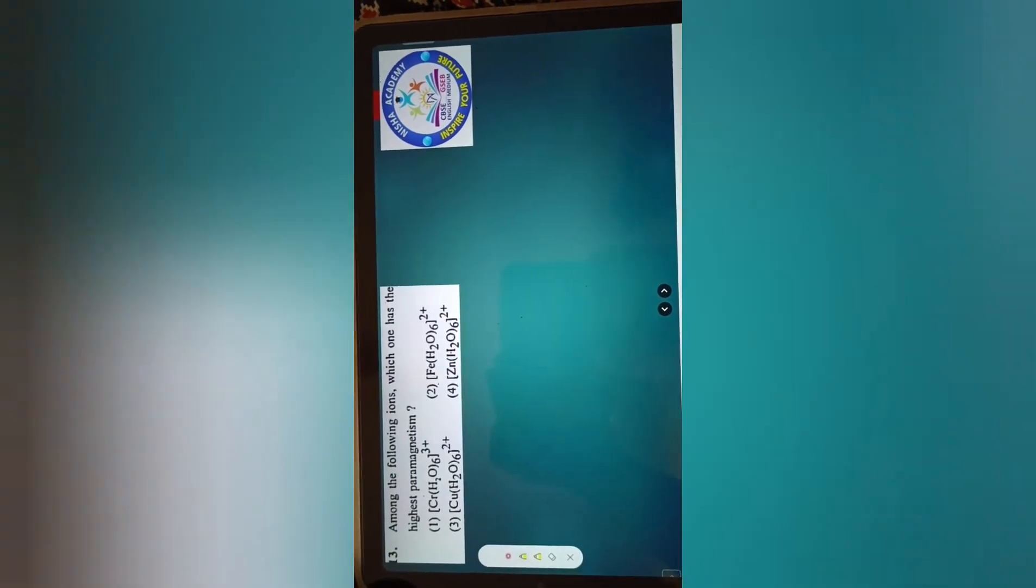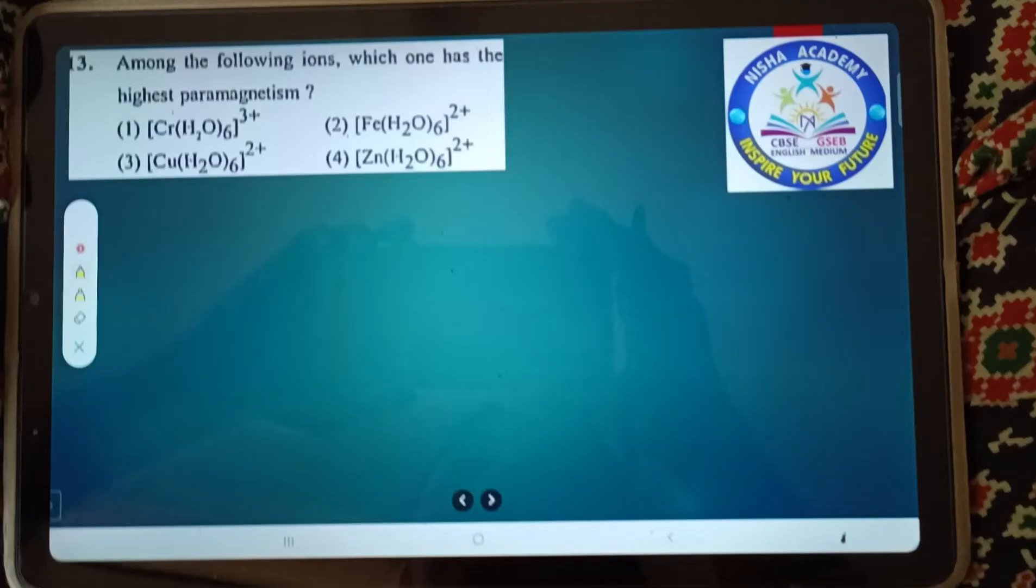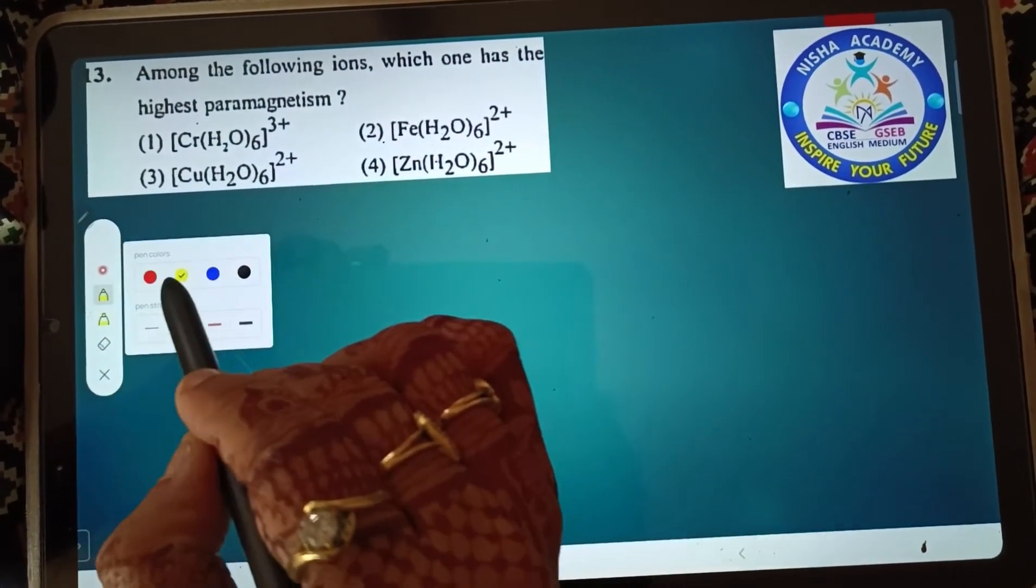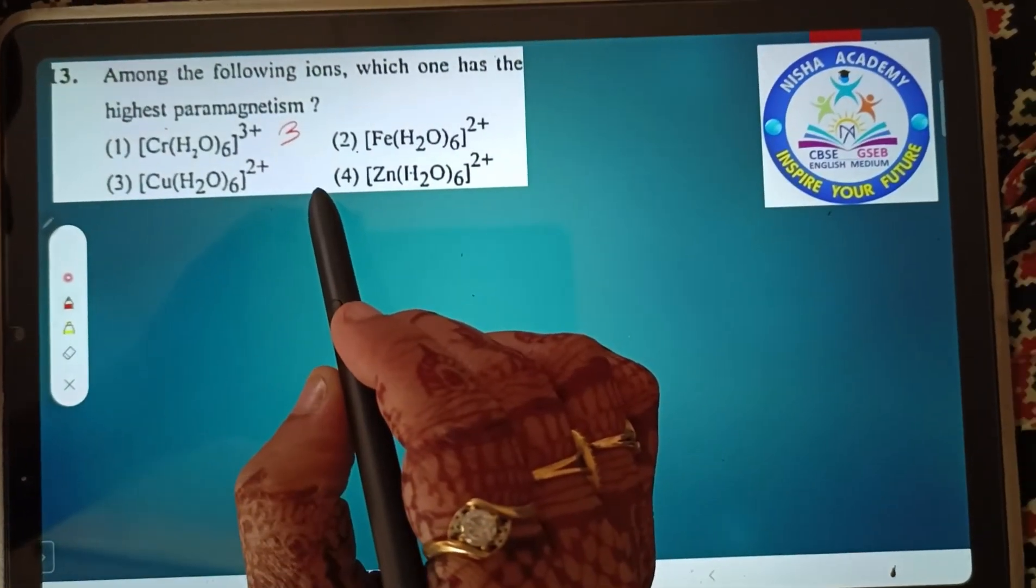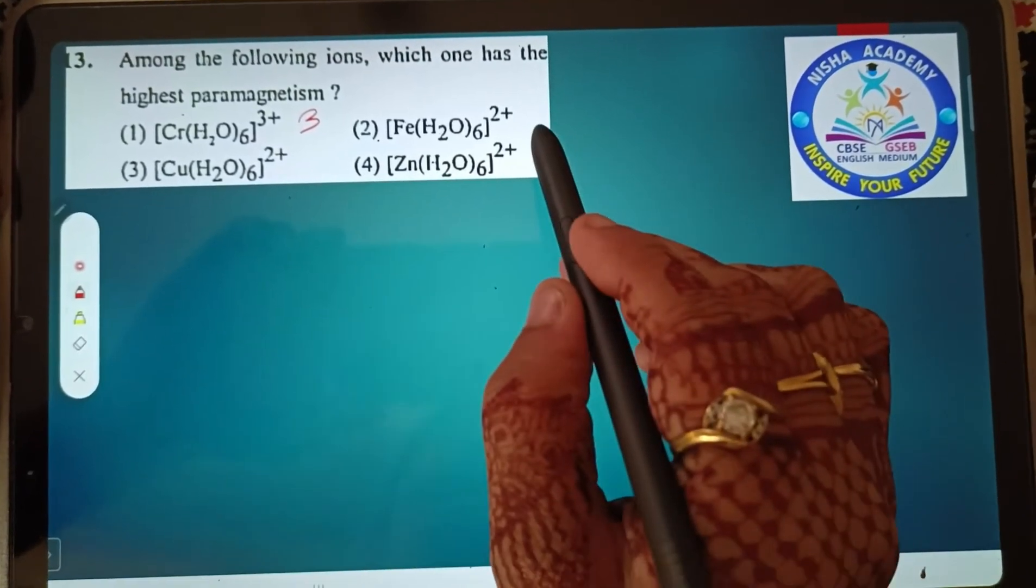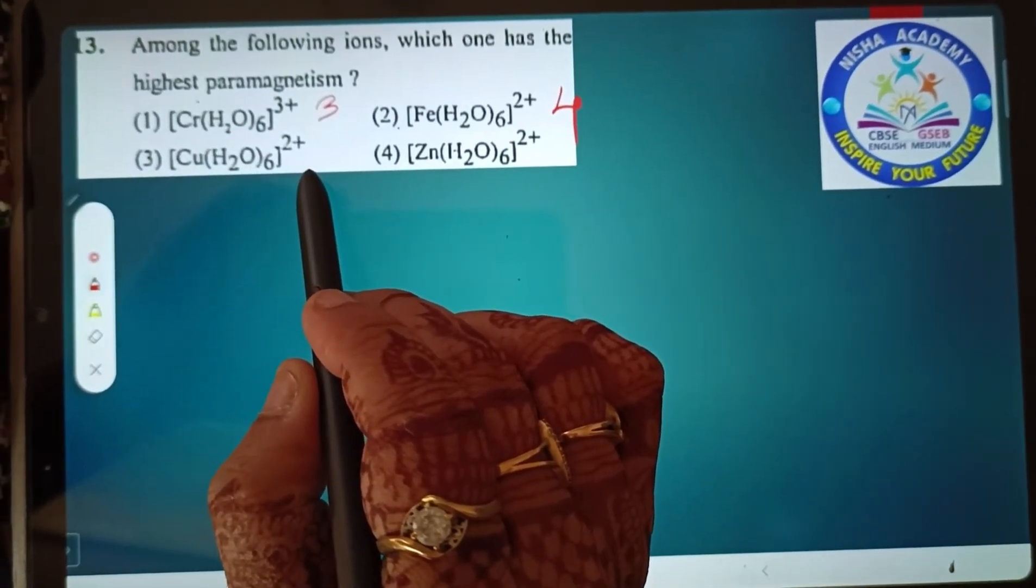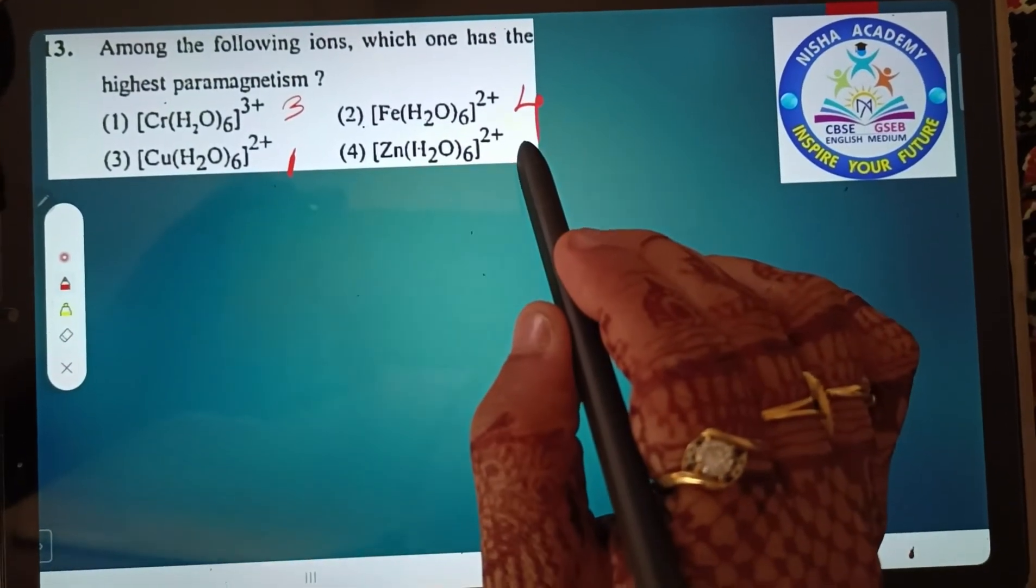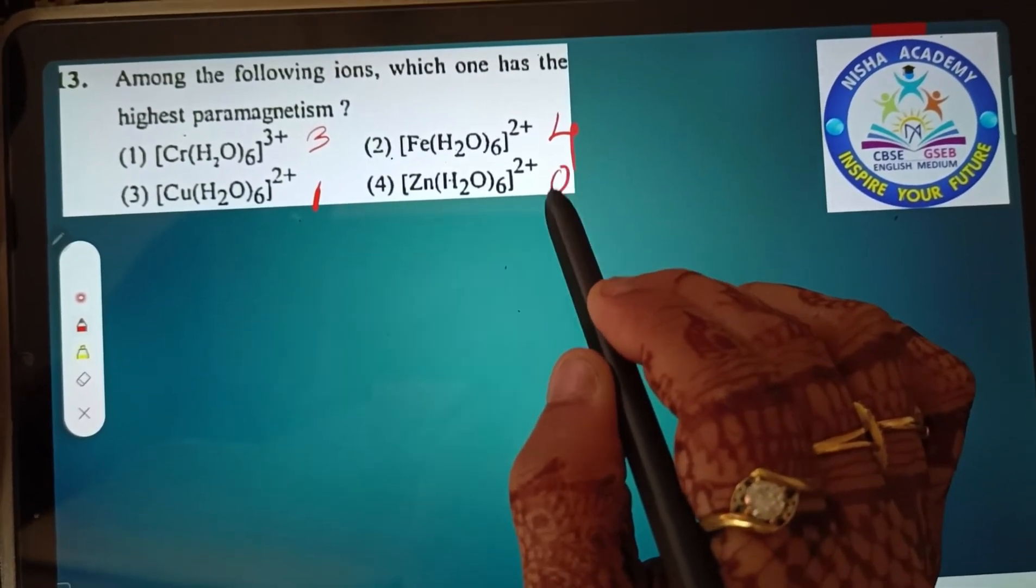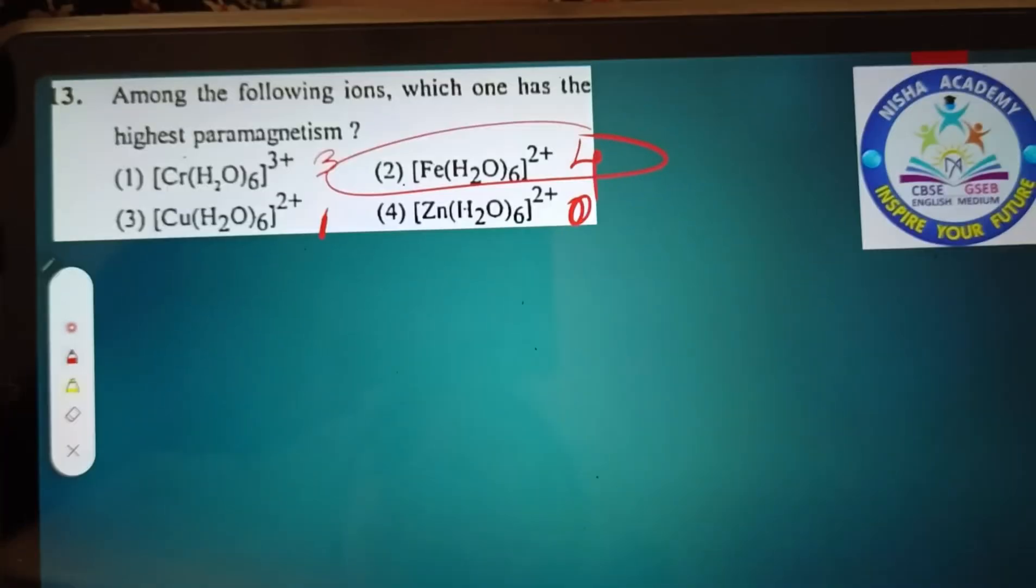Among the following ions, which one has the highest paramagnetism? Paramagnetism depends on the number of unpaired electrons. Check each option - first has three unpaired, second has four, third has one, fourth has zero. The answer is the one with maximum unpaired electrons. Complete.